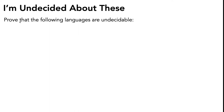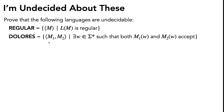We're looking at undecidable languages. The task is to prove that the following languages are undecidable: REGULAR and DOLORES. Before we get into what these languages are, let's recall the proof strategy for showing that a language is undecidable. That strategy is reductions. We've already seen reductions in action for showing that a language is decidable; now we're just going to tweak that strategy to show that a language is undecidable.